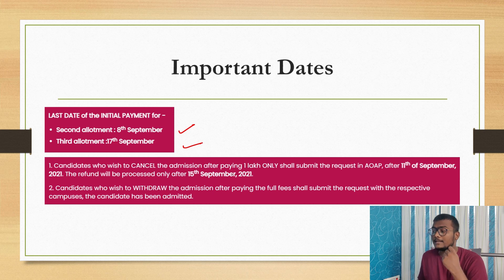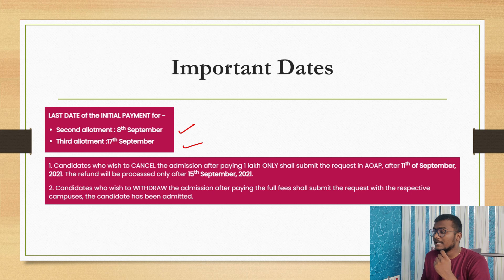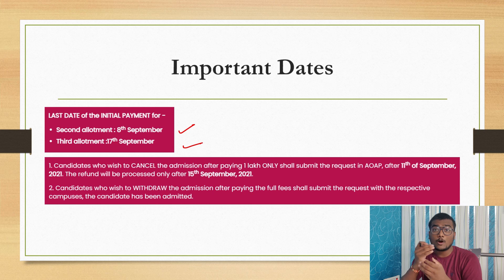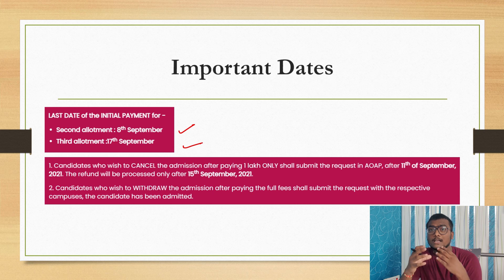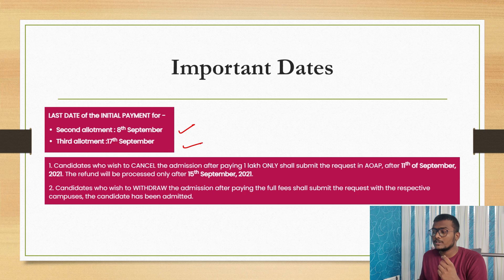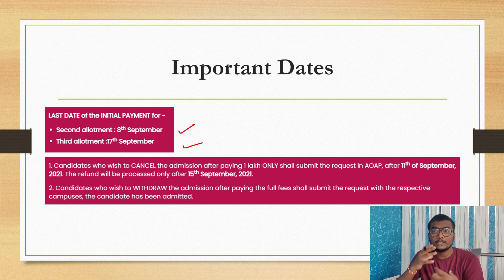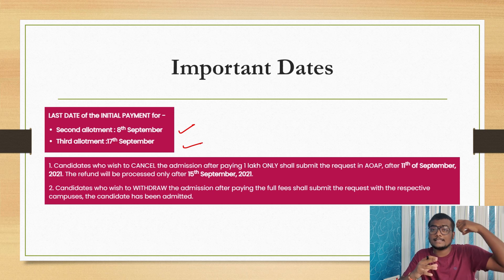Those who get a seat newly in the third allotment should pay by 17th September. Candidates who wish to cancel their admission after paying 1 lakh rupees shall submit the request in the AOAP dashboard of Amrita. After 11th September 2021, the refund will be processed only after 15th September — that means after the third round. If you want to withdraw your seat from Amrita, you can choose the withdraw option after 11th September. If you want to withdraw after paying the remaining fees and completing the full admission process, you need to contact the admission office or admin department of the college or branch where you got allotment.